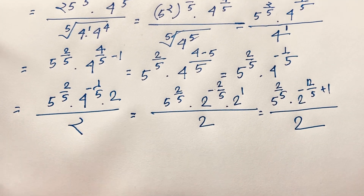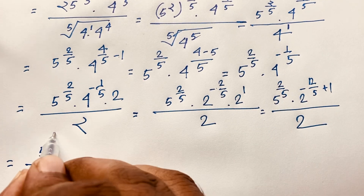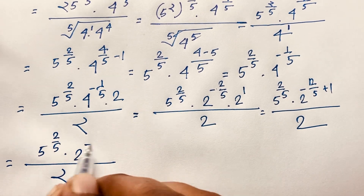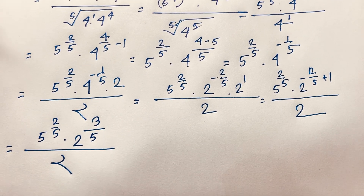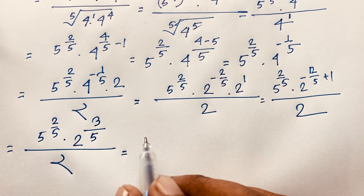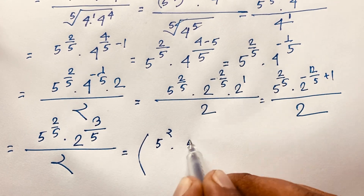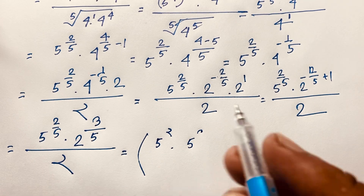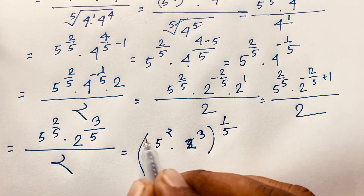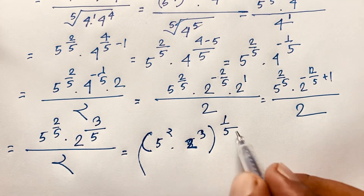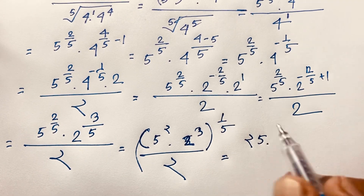Adding the exponents on 2: −2/5 + 1/2 has LCD 10, giving −4/10 + 5/10 = 1/10. But working with LCD = 5 as stated, we find 5^(2/5) × 2^(3/5) over 2. The common exponent 1/5 factors out: this equals (5² × 2³)^(1/5) over 2.